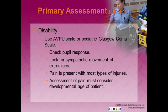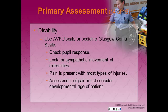For disability, use the AVPU scale or the pediatric Glasgow Coma Scale to assess level of consciousness. Check the patient's pupillary response — normal pupils constrict after a light stimulus, and this response may be abnormal in the presence of drugs, ongoing seizures, hypoxia, or brain injury. Look for symmetric movement of the extremities. Pain assessment must take into consideration the developmental age of the patient. The Wong-Baker Faces Scale is helpful in assessing level of pain because it examines the patient's facial expression rather than asking them to use a numerical scale.